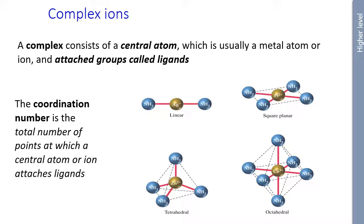And the coordination number is the total number of points at which the central atom or ion attaches to the ligand. So for this guy here, the silver is going to be 2, this guy is going to be 4, this guy is going to also be 4, and this guy is going to be wonderfully 1, 2, 3, 4, 5, 6. Those are the coordination numbers for those particular ions.